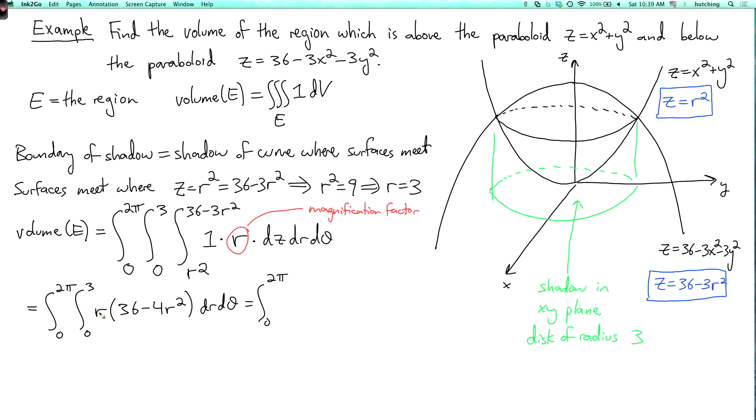And then I have 4r squared. And then I have 4r cubed. And the integral of that is r to the fourth. And I evaluate at r equals 3 and r equals 0. And then integrate with respect to theta.